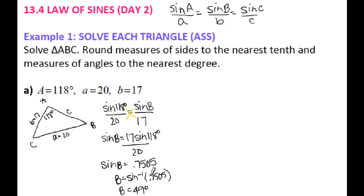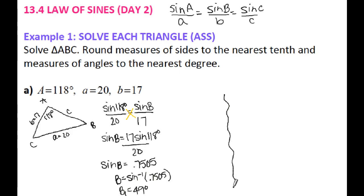Whenever you are solving triangles using Law of Sines and you solve for an angle measurement first, there is a possibility that you are going to have another triangle. If you're given an angle and two sides and using Law of Sines, you could have one solution, no solution, or two solutions. I always check to see if there's a second solution, so I'll label this as B1.